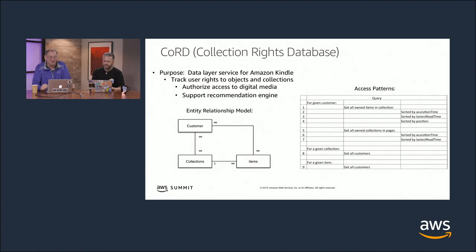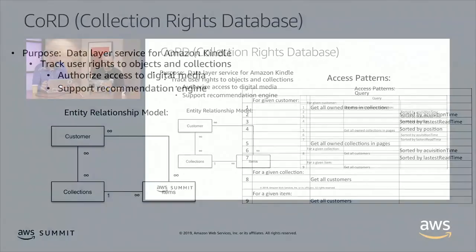The entity model has customers in the lower left. Customers own collections, and there's a many-to-many relationship between those two entities. Collections have items — a one-to-many relationship — but customers can also own individual items, not necessarily the whole collection. So there's a many-to-many between customers and items, and a one-to-many between collections and items — an interesting hierarchical model.